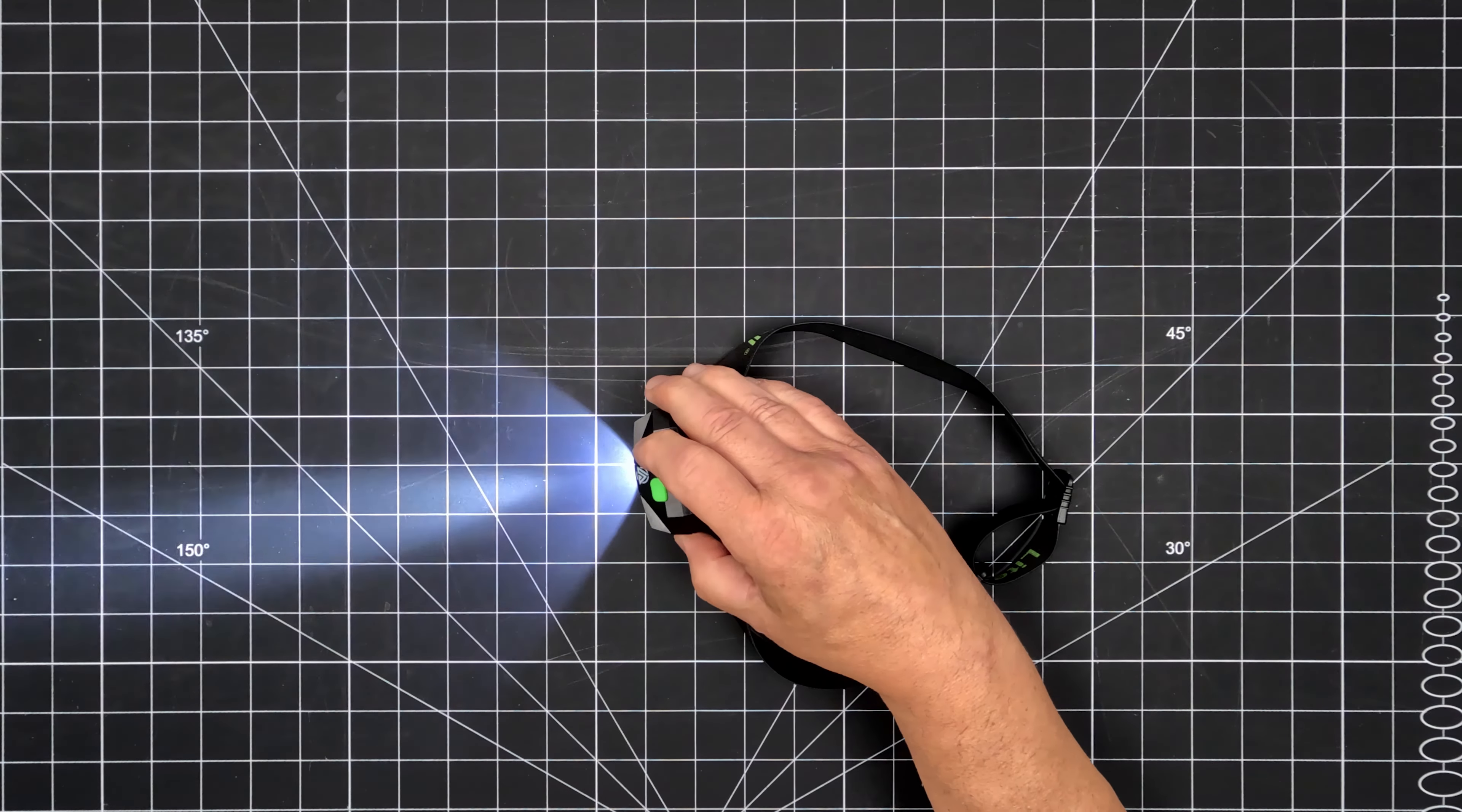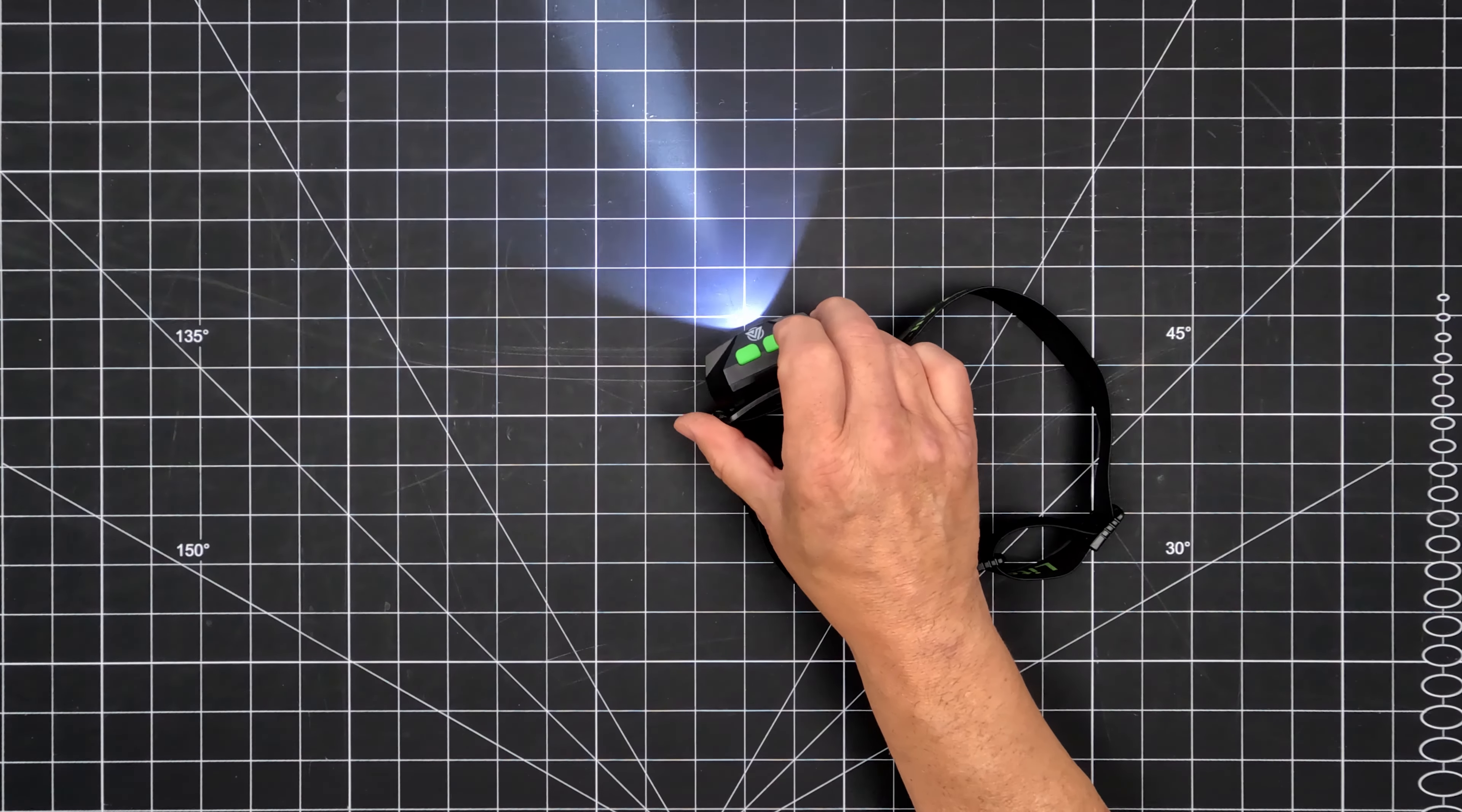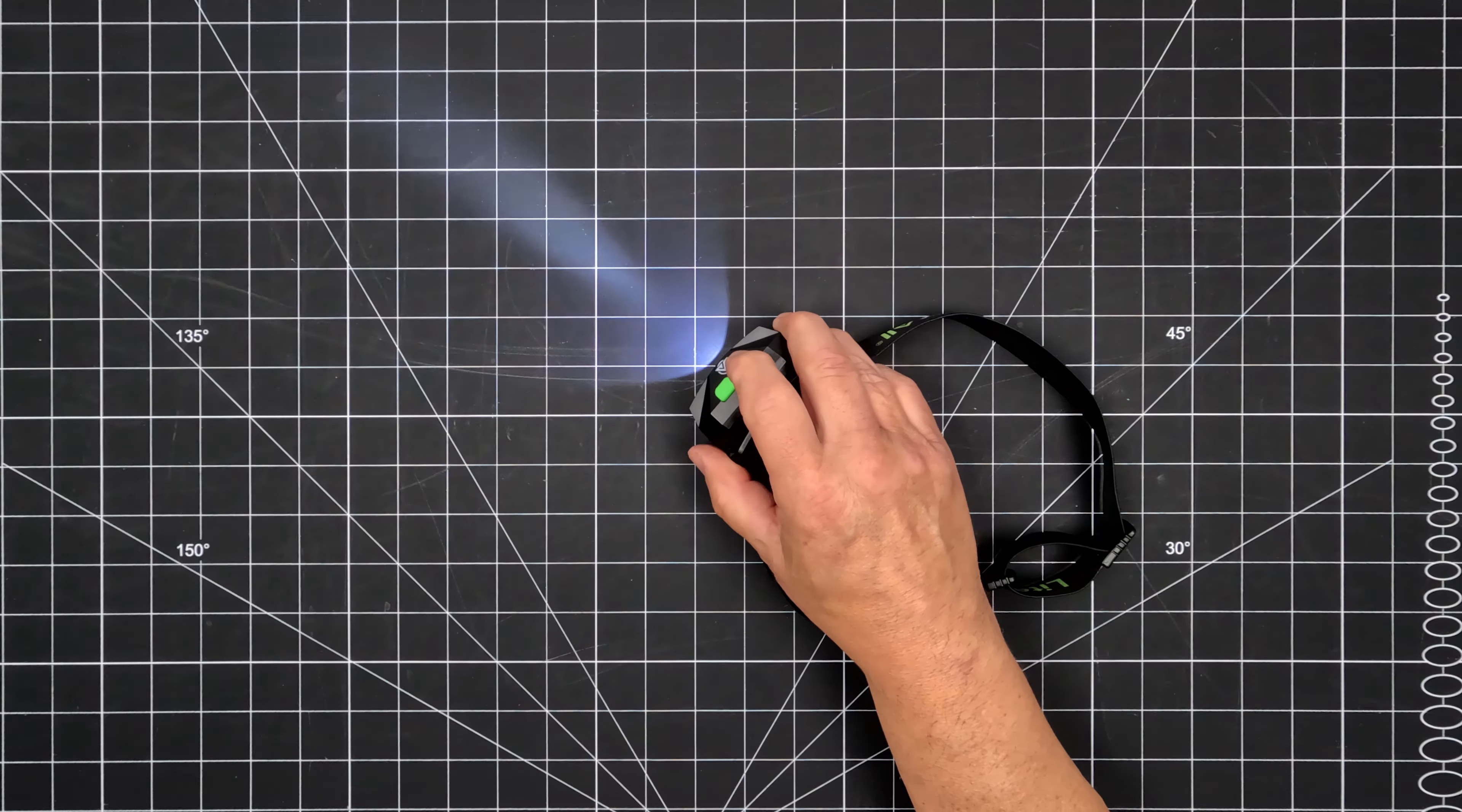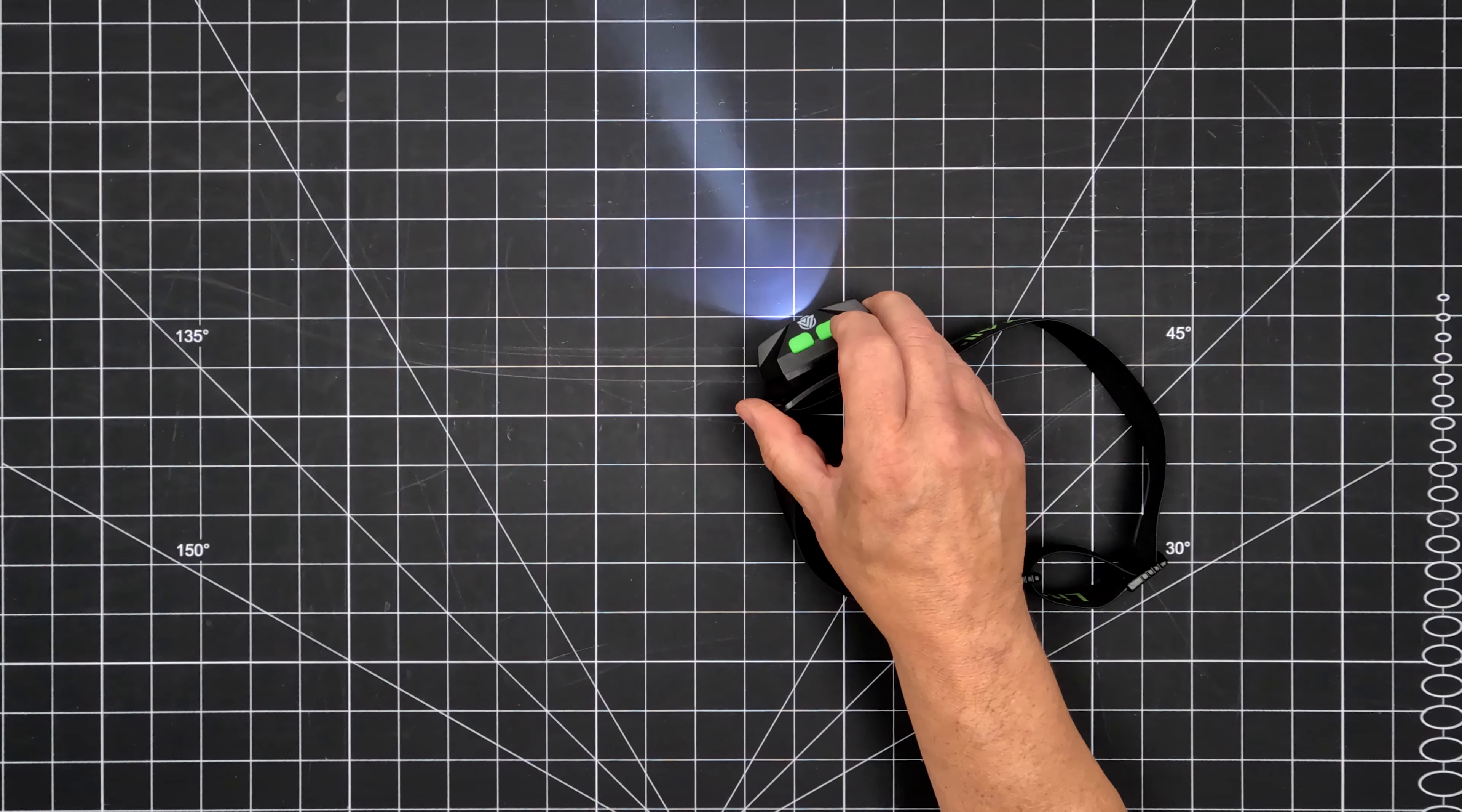Light modes include high spot at 300 lumens with a 3-hour run time and 459-foot light throw. Low spot at 100 lumens with a 5.5-hour run time and 230-foot light throw.